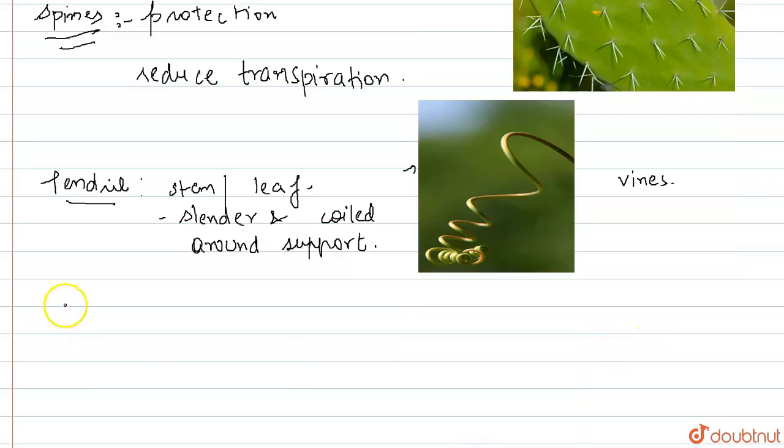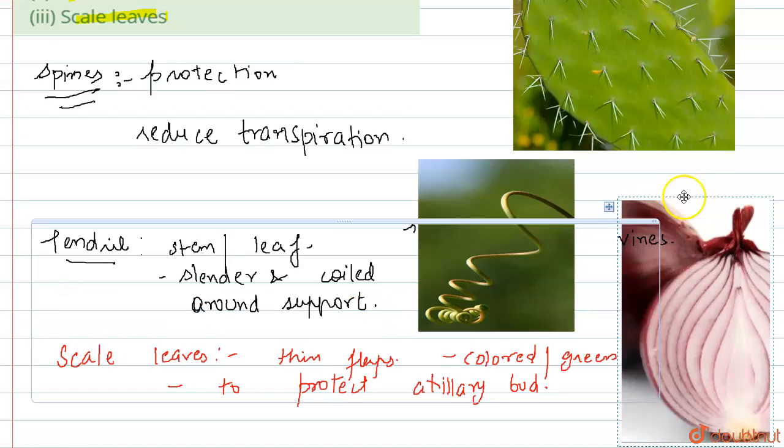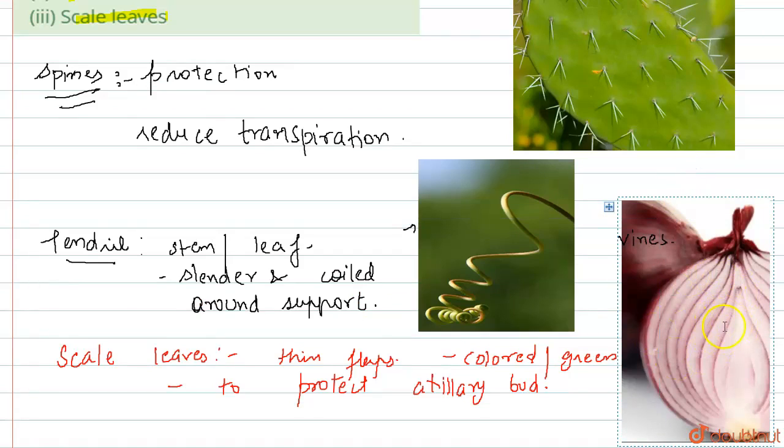Next, the function of scale leaves. These are leaves which are thin flaps that may be colored or green. The function of scale leaves is to protect the axillary bud. Scale leaves are present in onion. Here, the onion contains scale leaves - this is the bud from where the bud arises, and these are scale leaves which protect the axillary bud.